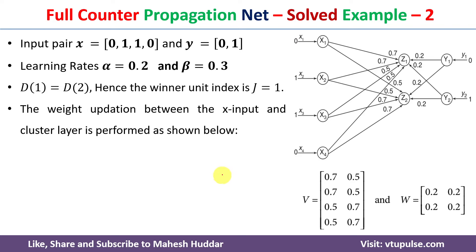Now d1 = 1.76 and d2 = 1.76; because both are equal, the lowest-index cluster unit wins. z1 has the lower index, so the input pair is assigned to z1, and j becomes 1.